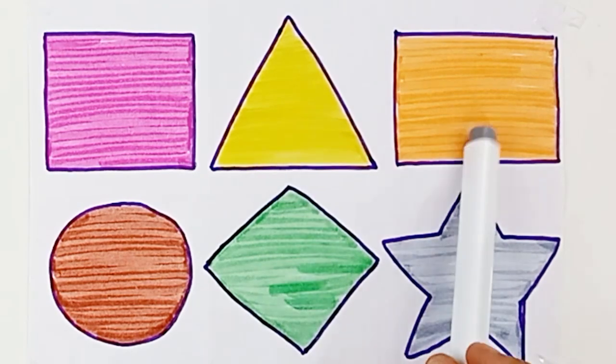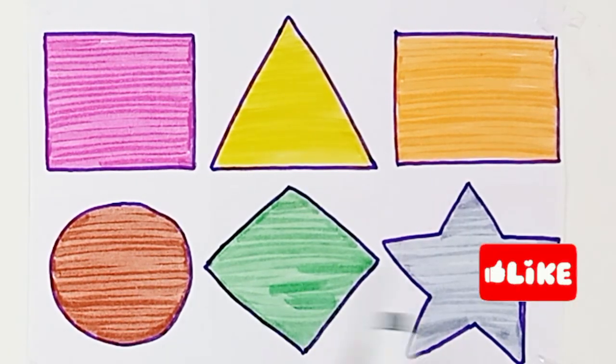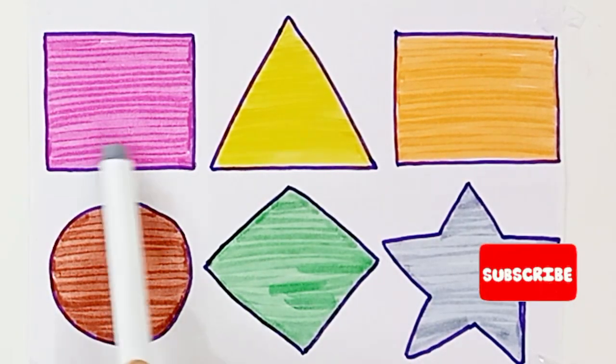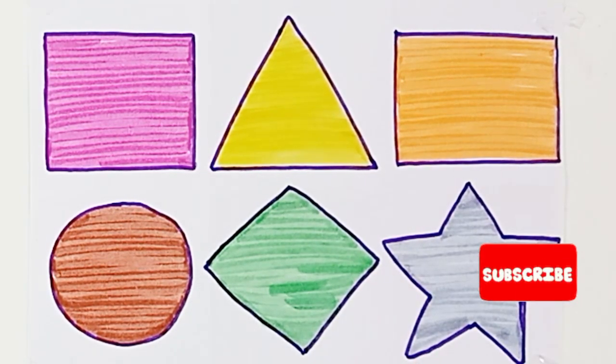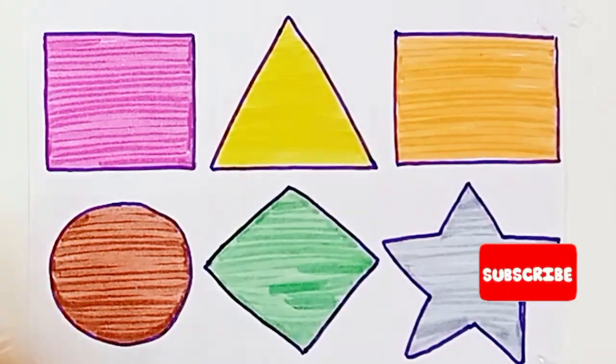Pink color, yellow color, orange color, brown color, light green color. Square, triangle, rectangle, circle, rhombus, star. Thank you for watching. Please share, like, and subscribe. See you in the next video. Bye bye.